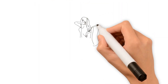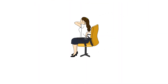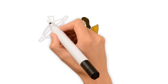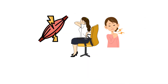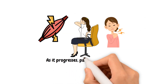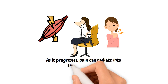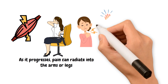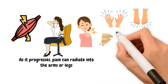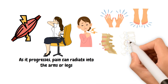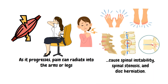DDD may cause localized pain, muscle spasms, and stiffness in the neck or lower back. As it progresses, pain can radiate into the arms or legs, leading to numbness, tingling, or weakness. In severe cases, it can also cause spinal instability, spinal stenosis, and disc herniation.